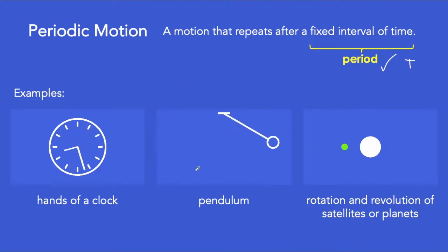Notice that a periodic motion doesn't need to have a circular or elliptical path during its motion like what is shown by this pendulum. The important thing is that it must repeat its motion after a specific interval of time.